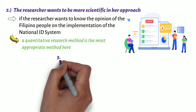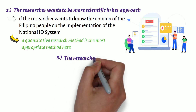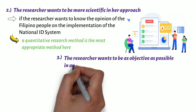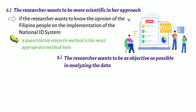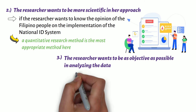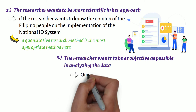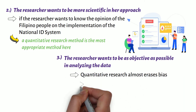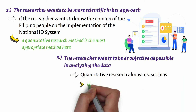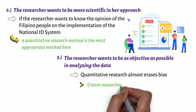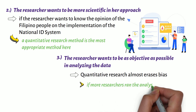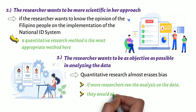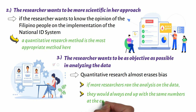Third, the researcher wants to be as objective as possible in analyzing the data. This is because quantitative research almost erases bias, and if more researchers ran the analysis on the data, they would always end up with the same numbers at the end of it.